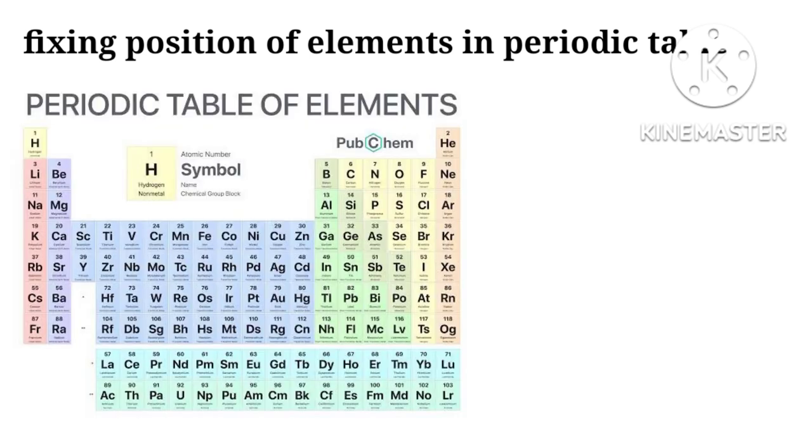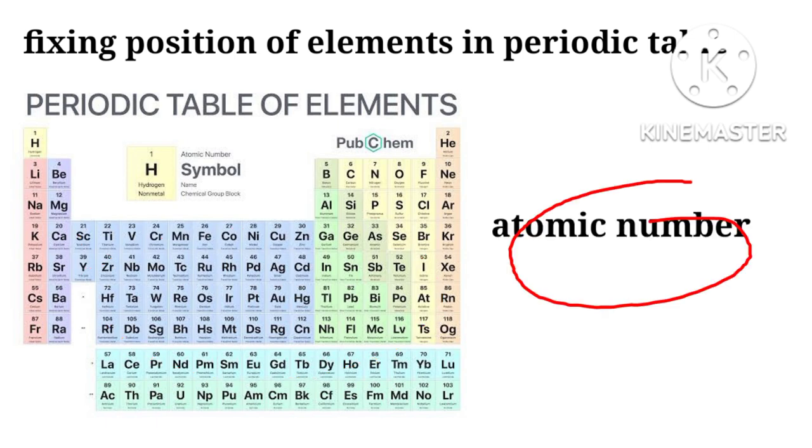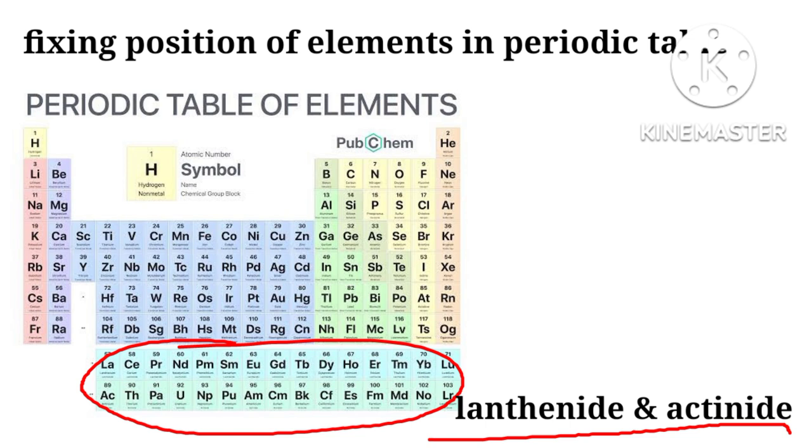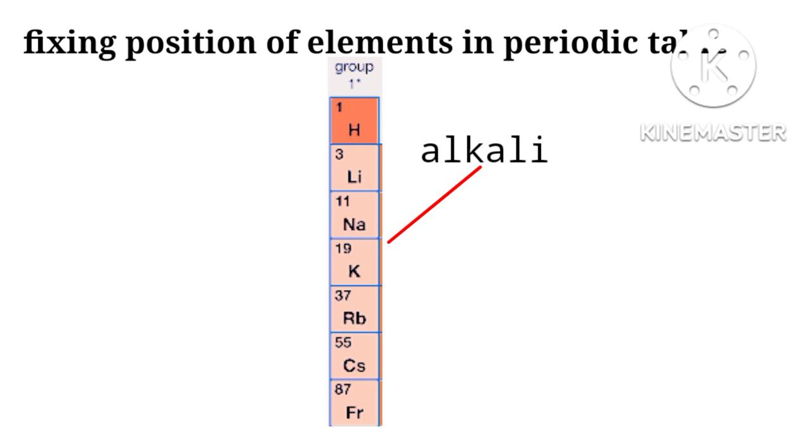In the modern periodic table, elements were arranged on the basis of their atomic numbers. Elements were arranged in 18 groups, in 8 periods, and two more laid down below as lanthanides and actinides.